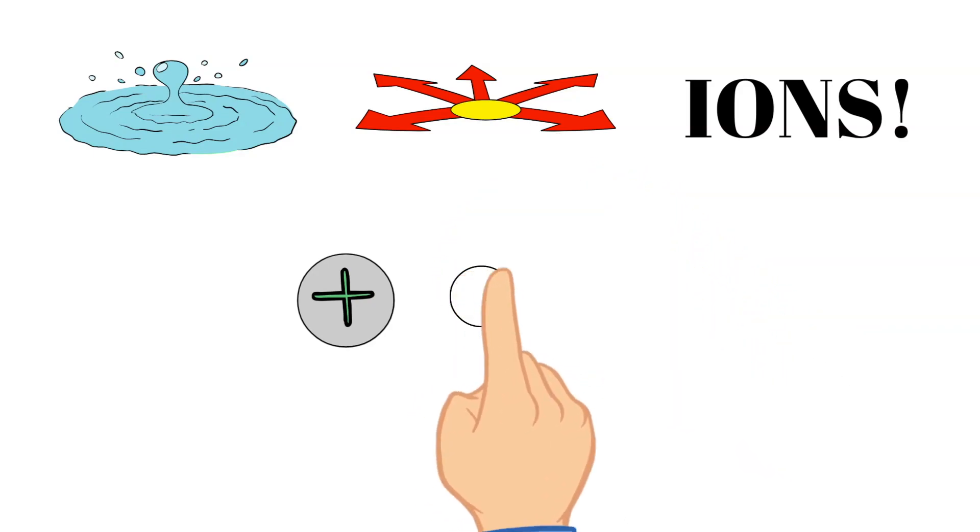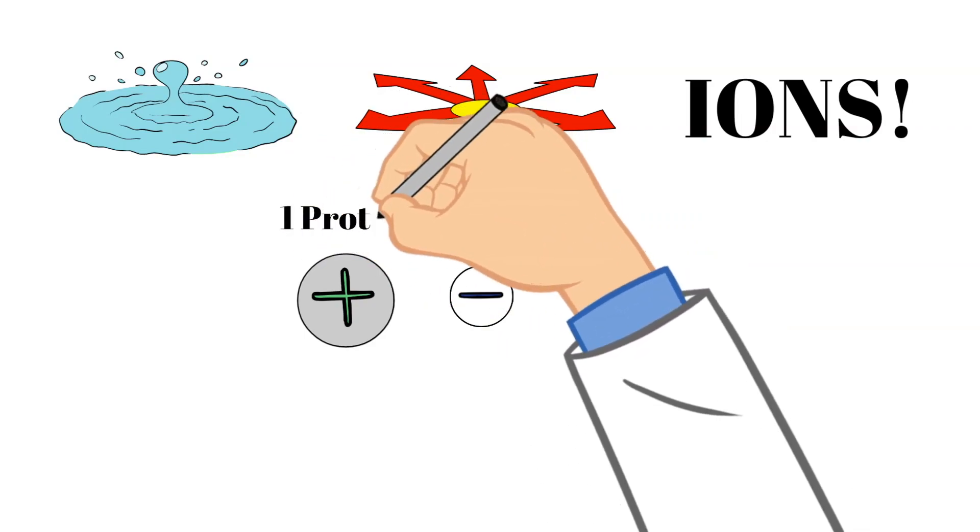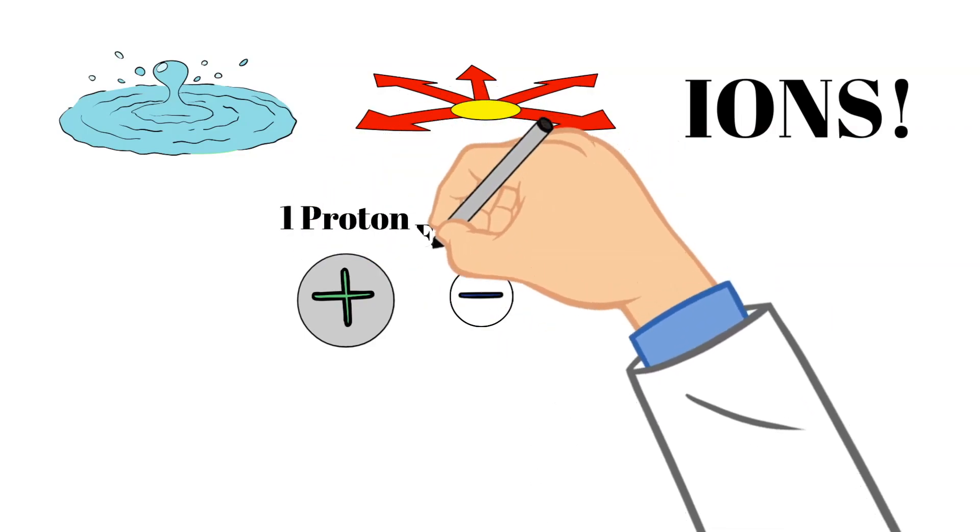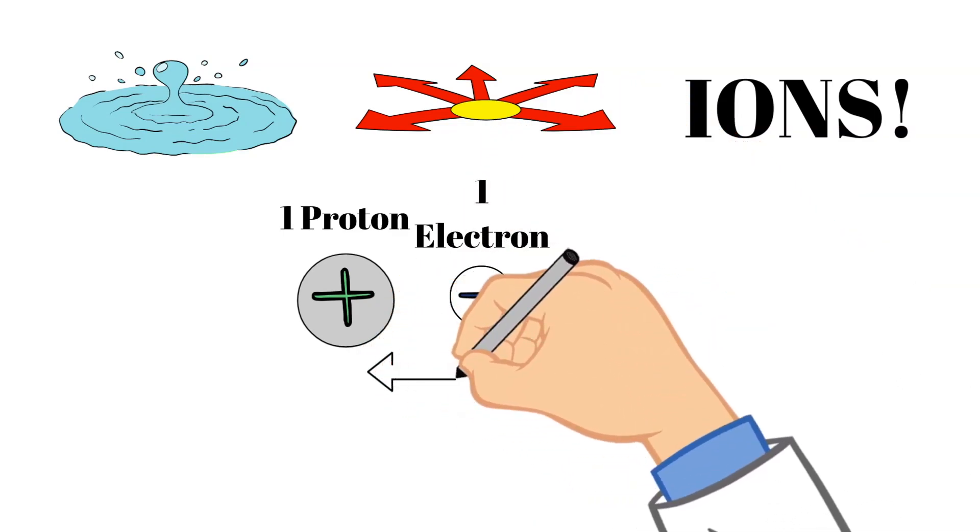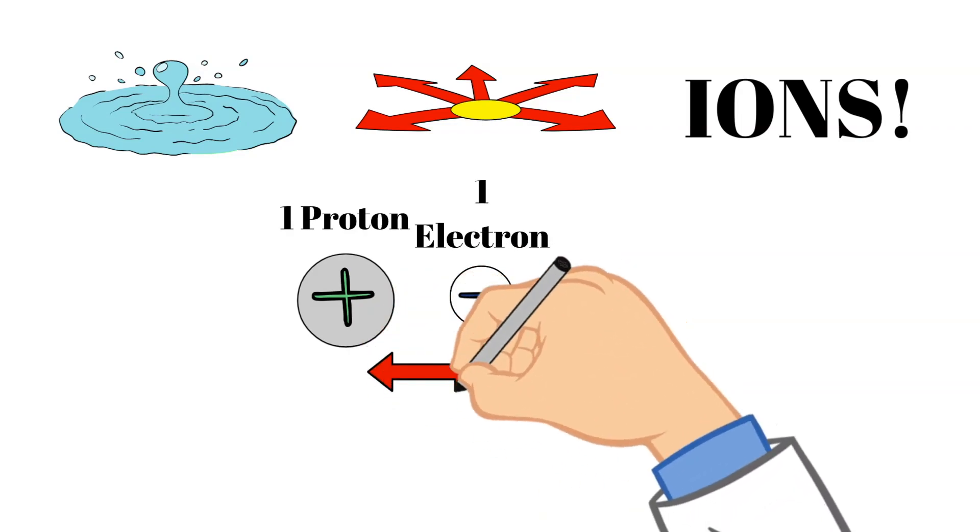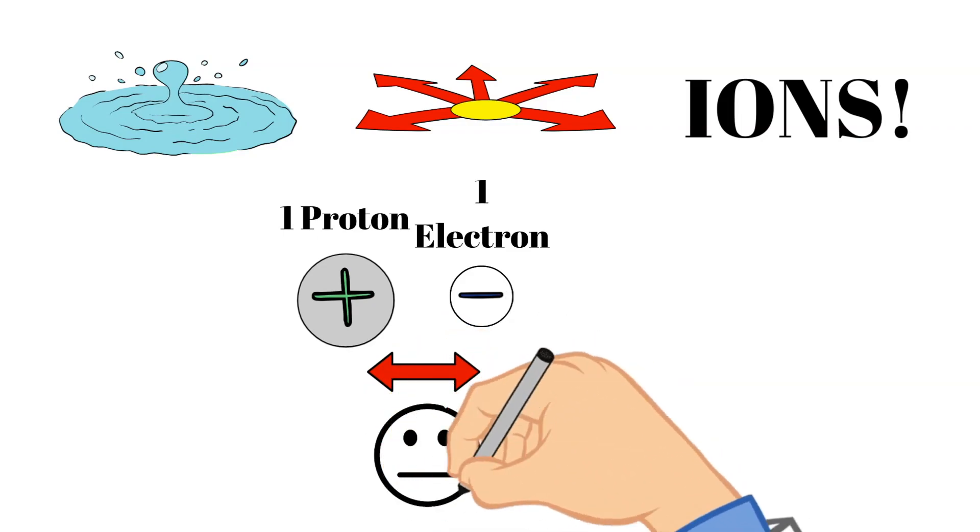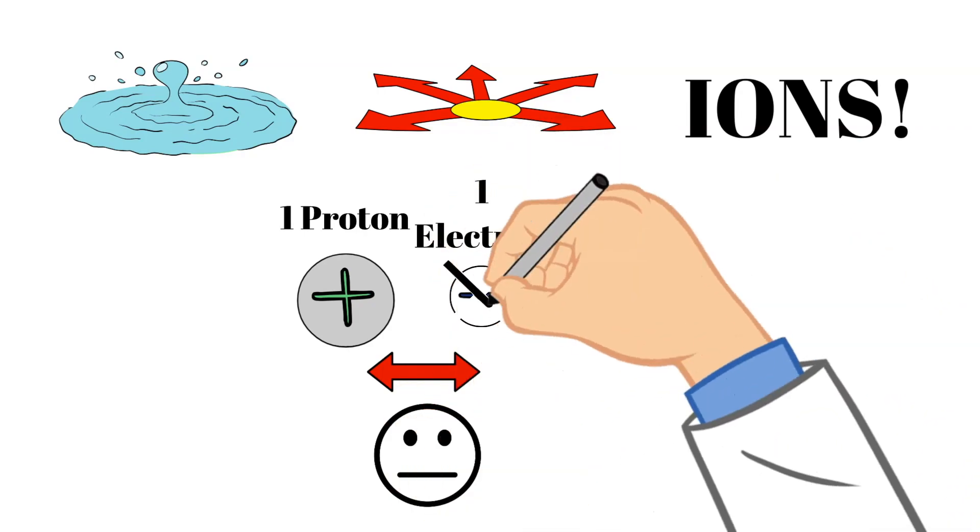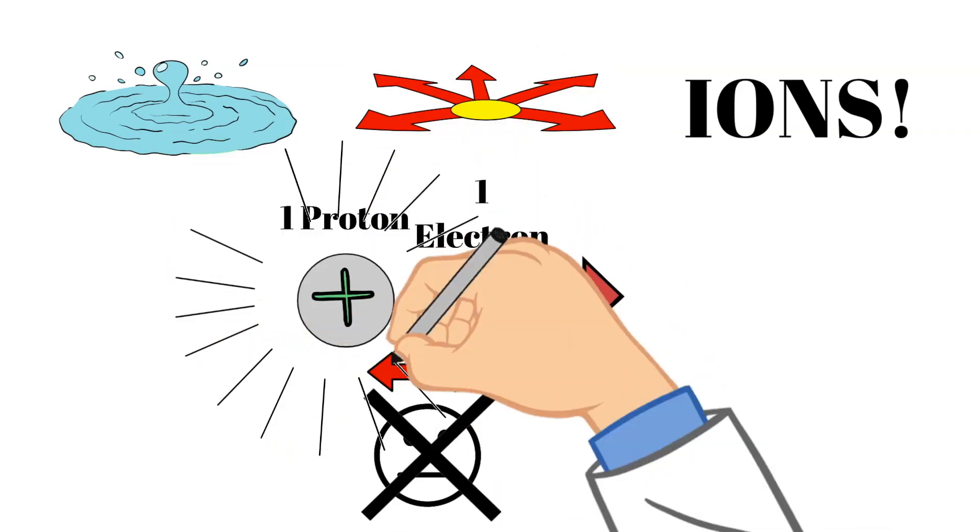So for example, a hydrogen atom consists of one proton, which has a positive charge, and one electron, which is a negative charge. And so under normal circumstances, if there's one positive charge and one negative charge, they cancel each other out and make the hydrogen atom neutral. But let's just say a hydrogen atom lost its electron. Well, now it becomes an ion and this ion has a positive charge.